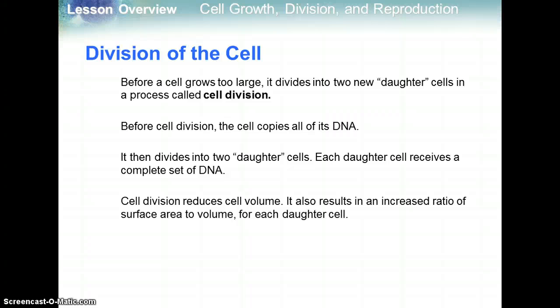Before a cell grows too large, it divides into two new daughter cells — this process is called cell division. Before cell division, the cell copies all of its DNA because the new cell needs the same genetic information. It then divides into daughter cells, and each daughter cell receives a complete set of DNA. Cell division reduces cell volume and results in an increased ratio of surface area to volume for each daughter cell, which makes your cell more efficient.